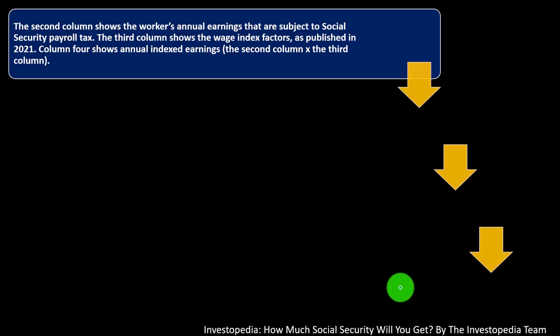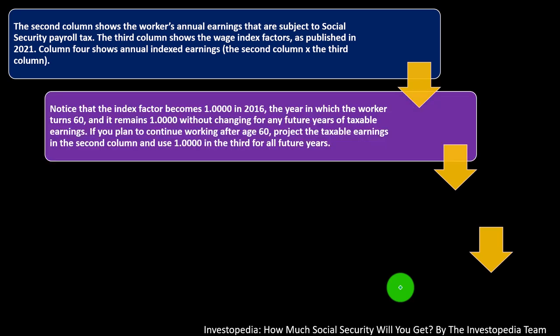The second column shows the workers' annual earnings subject to Social Security payroll tax. The third column shows the wage index factor as published in 2021. Column four shows annual indexed earnings — column two times column three. Notice that the index factor becomes one in 2016, the year in which the worker turns 60, and it remains one without changing for any future years of taxable earnings.